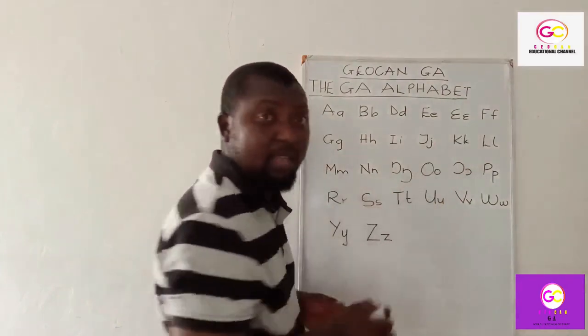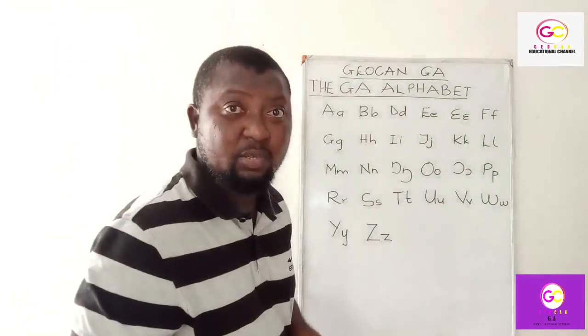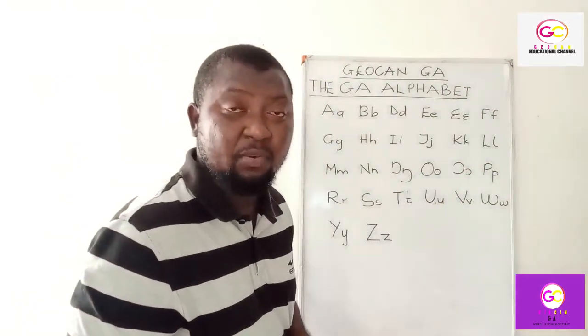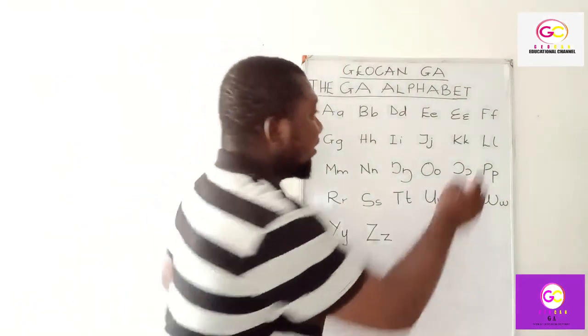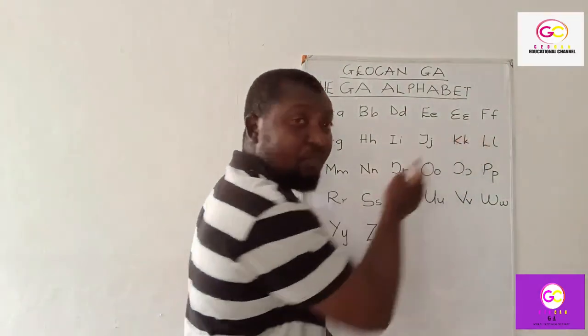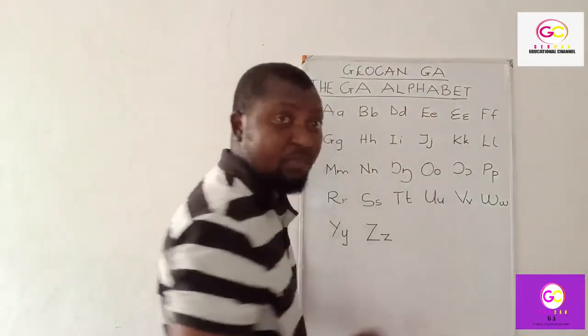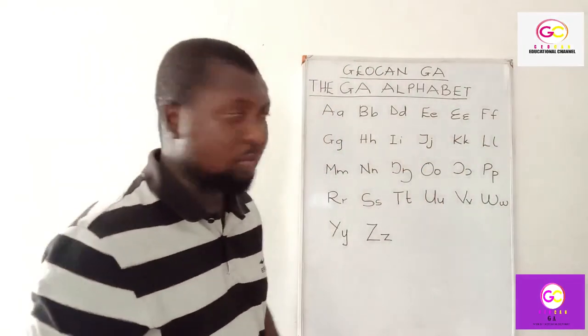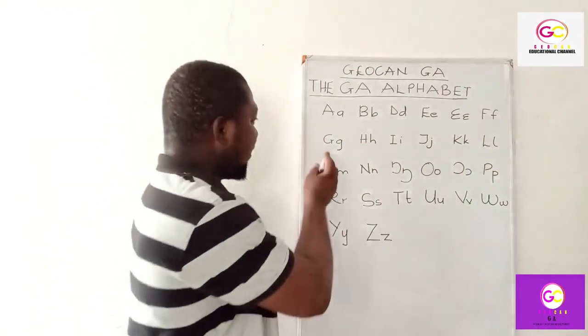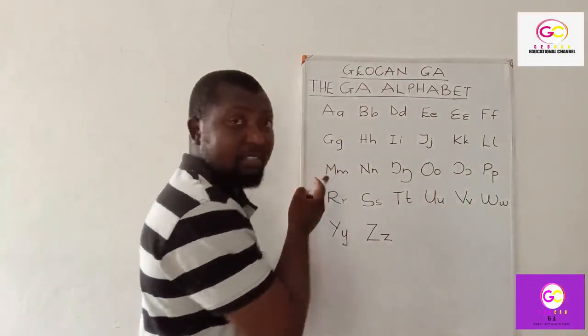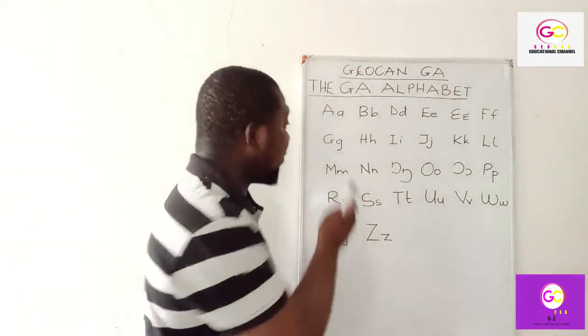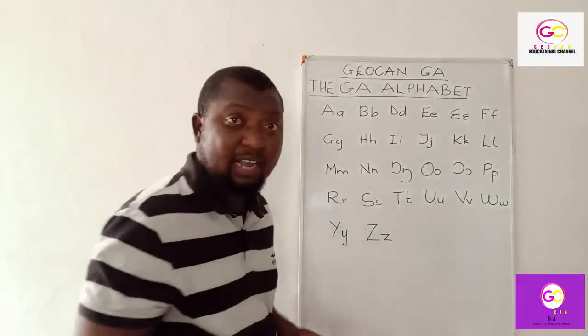This one sounds 'foo' — say 'foo.' Once again: 'foo.' Good. Let's pronounce this next one. This one sounds 'g' — repeat: 'g.' Good.